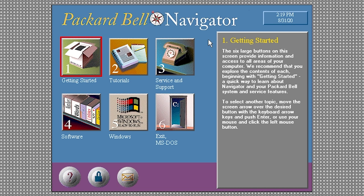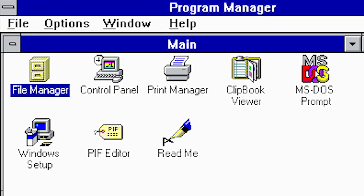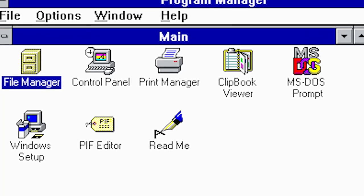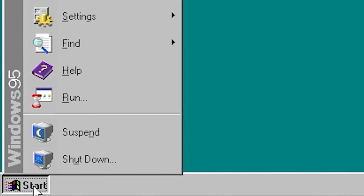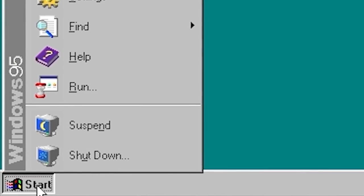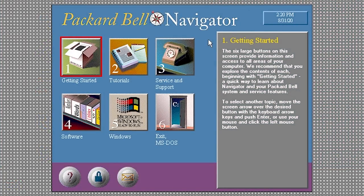It functions as a replacement to either the Windows 3.1 Program Manager or, in later versions, the Windows 95 Explorer Start Menu and Taskbar. Today we're going to be taking a look at two versions of this program: version 1.0, which is what we've got on the screen right now, and version 3.5, which was released a few years later. Version 1.0 was first released in 1993 and shipped with Packard Bell computers that ran Windows 3.1.